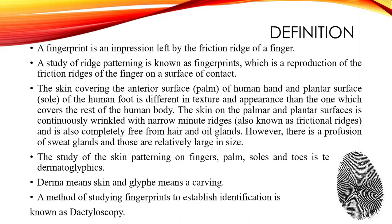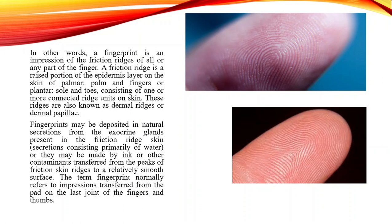Each of your fingers has some kind of pattern — these are classified as fingerprint patterns. In other words, a fingerprint is an impression of the friction ridges of all or any part of the finger. A friction ridge is a raised portion of the epidermis layer on the skin of the palmar and plantar surfaces, consisting of one or more connected ridge units. These ridges are also known as dermal ridges or dermal papillae.